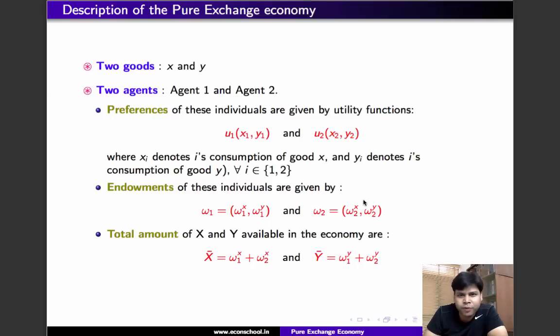Consider the following environment. Suppose there are just two goods, two individuals. Individual 1's utility function is given by u1, individual 2's utility function is given by u2. Let us suppose that the endowment of individual 1 is omega 1 x units of x and omega 1 y units of y.